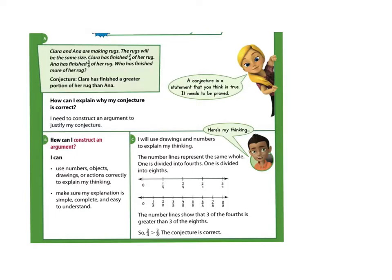Clara and Anna are making rugs. The rugs will be the same size. Clara has finished three fourths of her rug and Anna has finished three eighths of her rug. A conjecture is basically a fancy word for your answer — it's the conclusion that you are drawing. A conjecture is a statement that you think is true, and it needs to be proved.